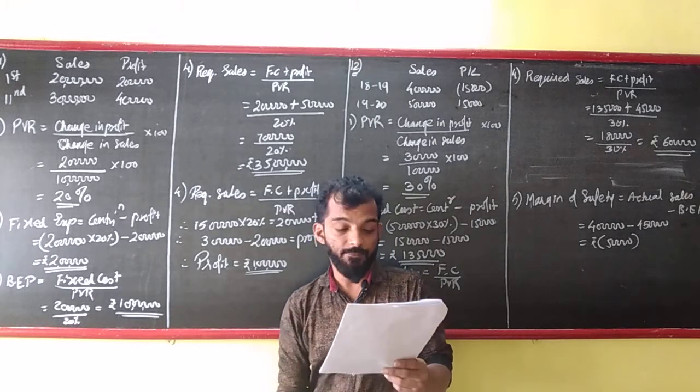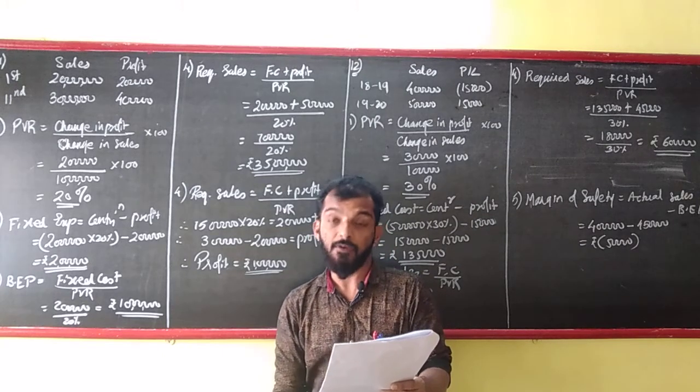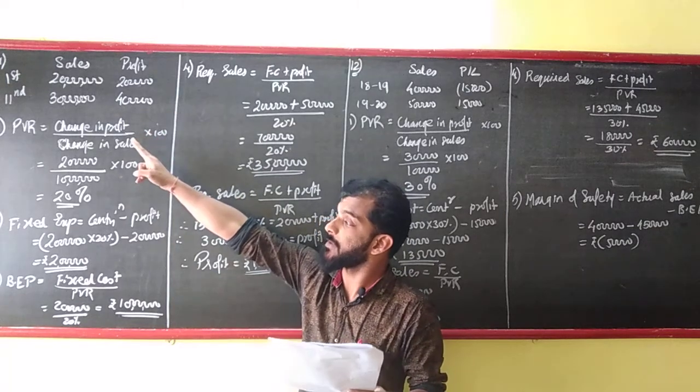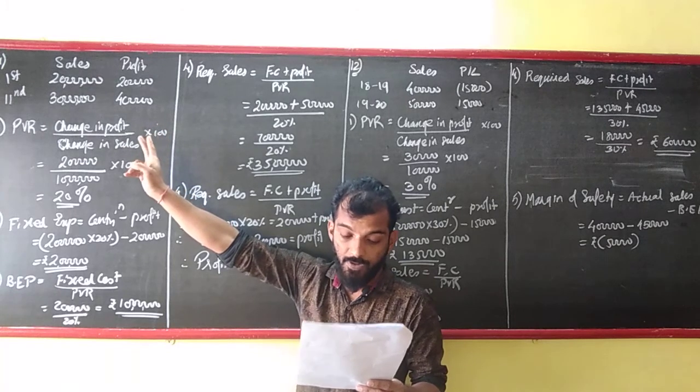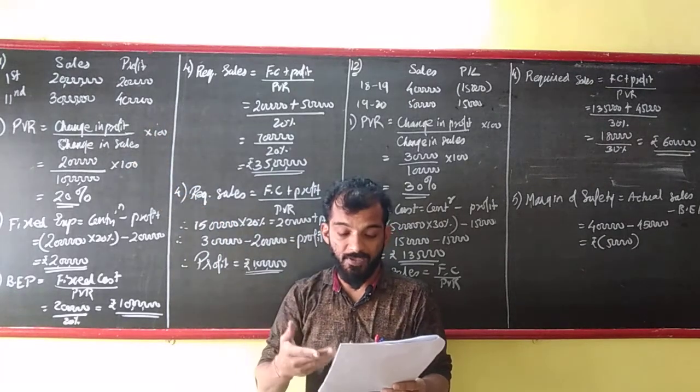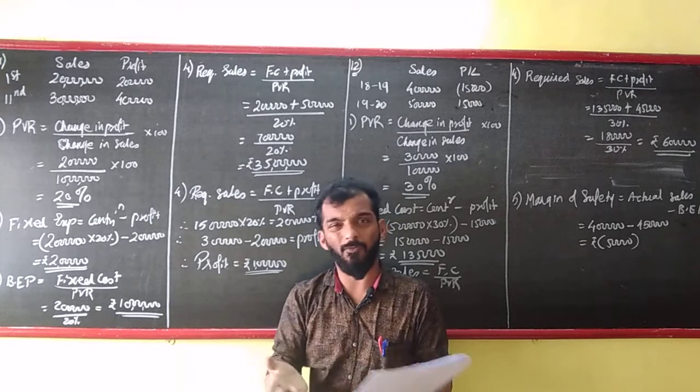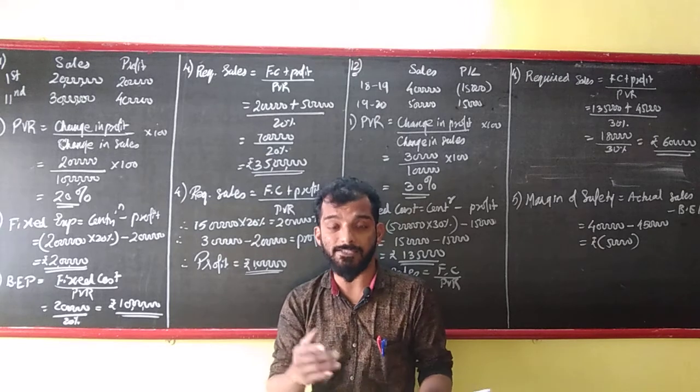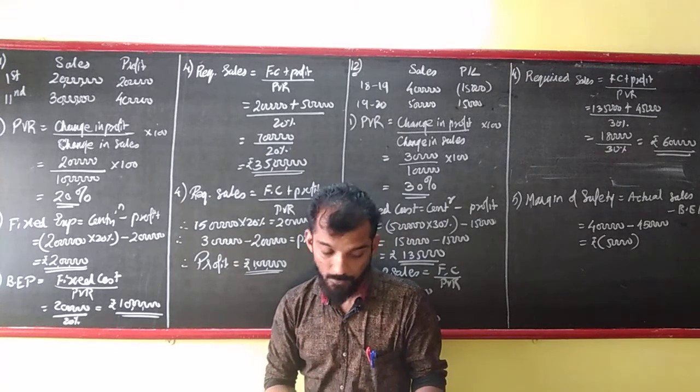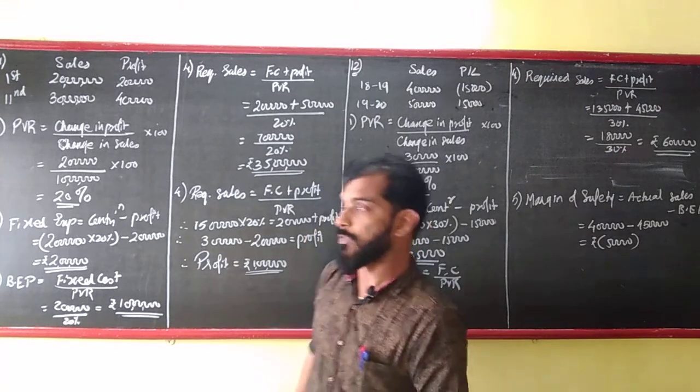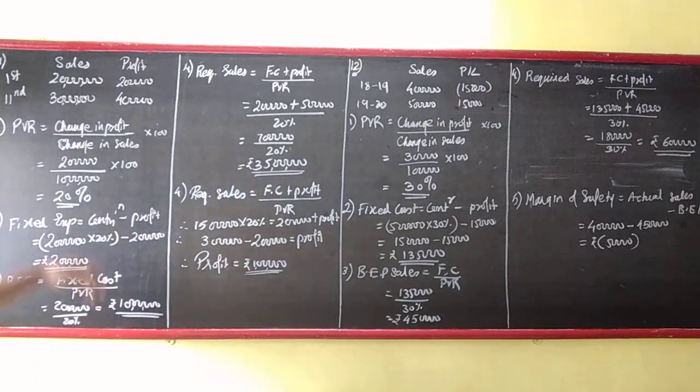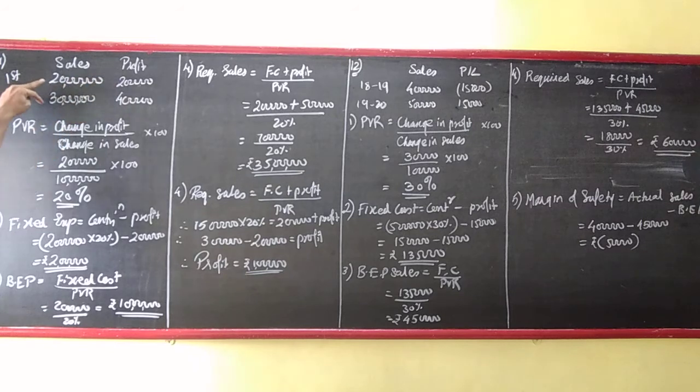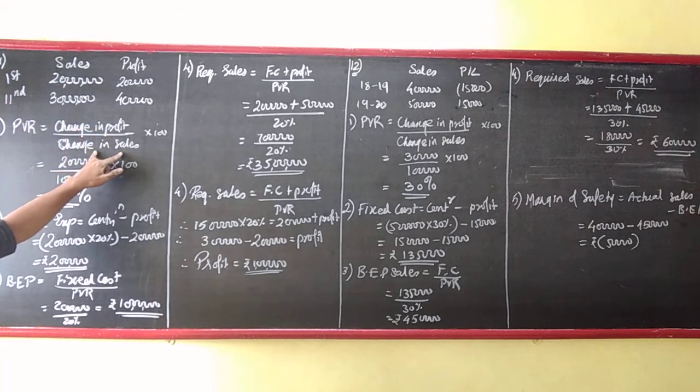That is sum number 11. The Excel sheet has the following information: first period sales is 20 lakhs and profit is 2 lakhs, second period sales is 30 lakhs and profit is 4 lakhs. From the above, calculate PVR, fixed expense, BEP, then sales to earn a profit and so on. Let's see the first thing, PVR. PVR is change in profit upon change in sales. The profit is 2 lakhs and sales change is 10 lakhs, so 2 lakhs upon 10 lakhs into 100, that is 20%.